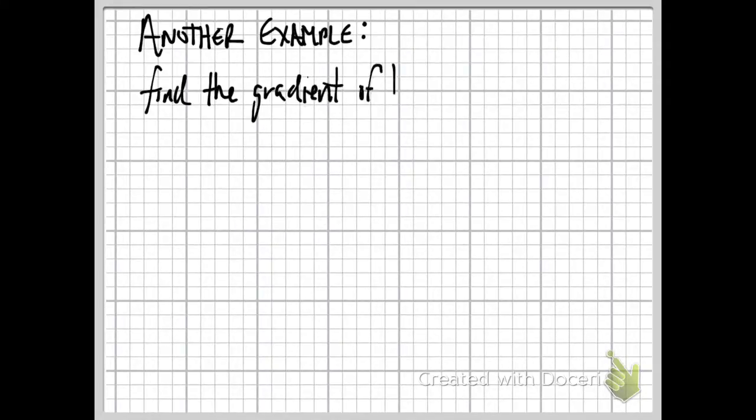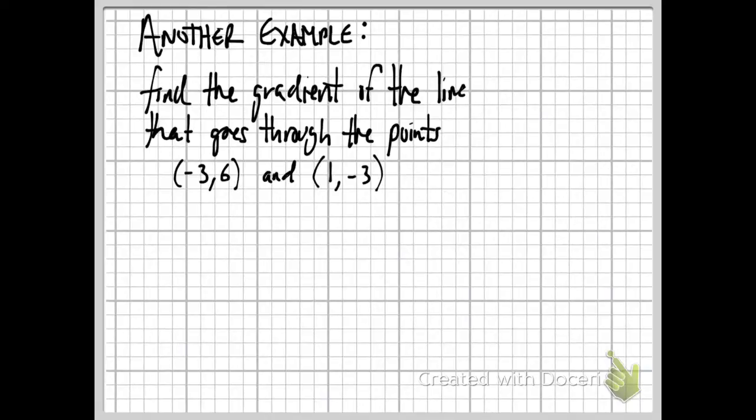Let's look at one more example here. Another example, we're going to find the gradient of the line that goes through the points (-3,6) and (1,-3). Now, we don't have a drawing this time. You could, as I said before, you could just plot these points and sort of do it visually. How much does it go up? How much does it go over? But that's actually more work than you need to do. We can just use our fancy formula, y2 minus y1 over x2 minus x1. We can pick which points we want to be point 1 and 2. It actually doesn't matter as long as we're consistent.